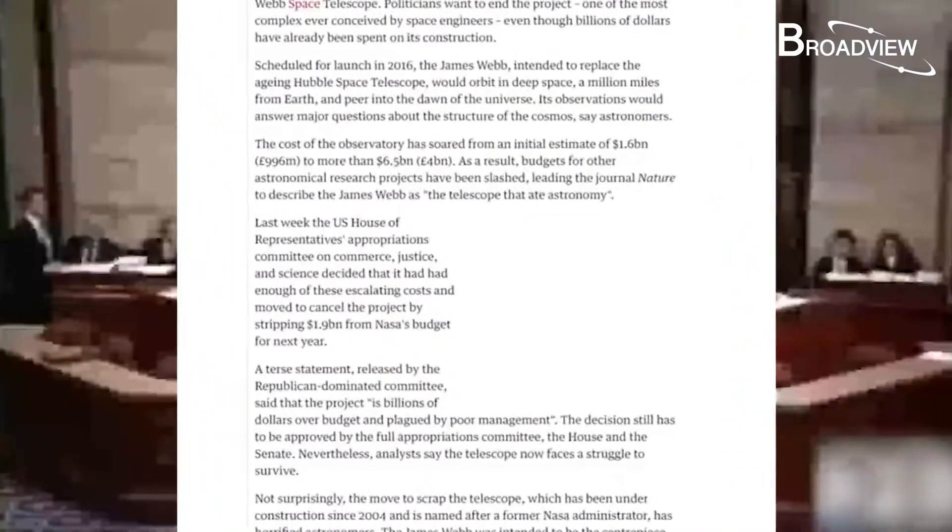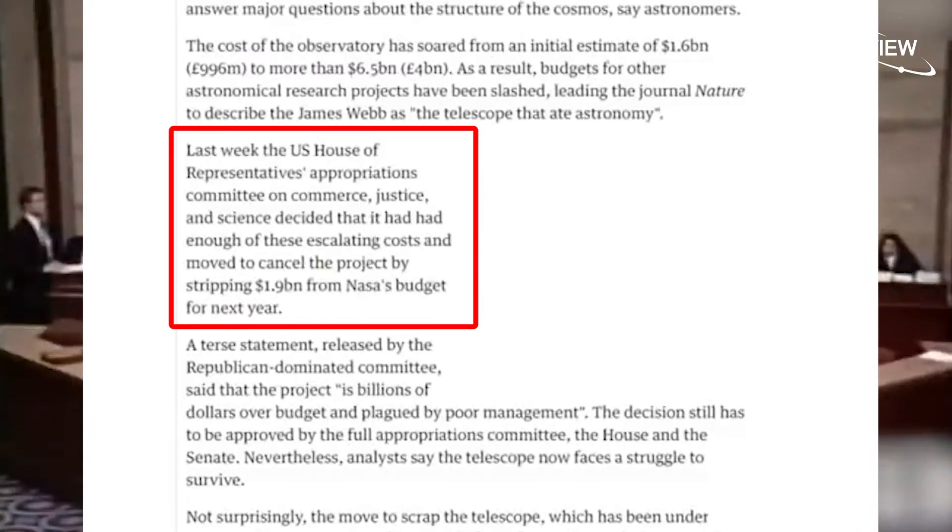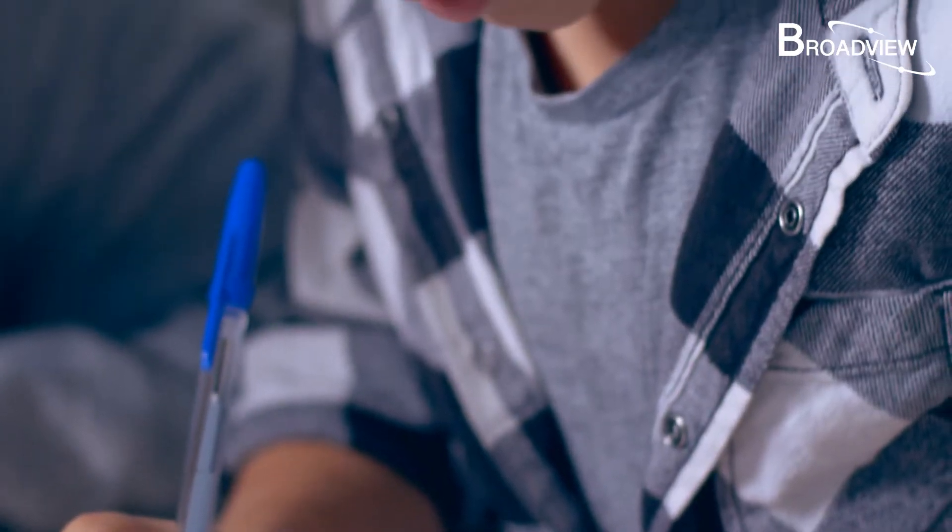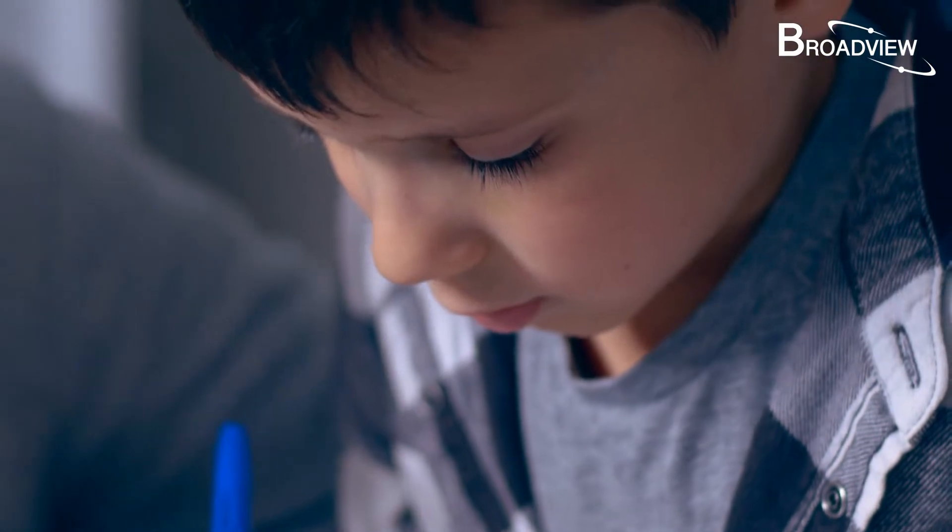So when Congress decided to cut $1.9 billion in spending and demanded the cancellation of the program, senators stood up for James Webb, and elementary school students wrote letters to the president to plead for it. These efforts saved the king of telescopes from being cancelled.